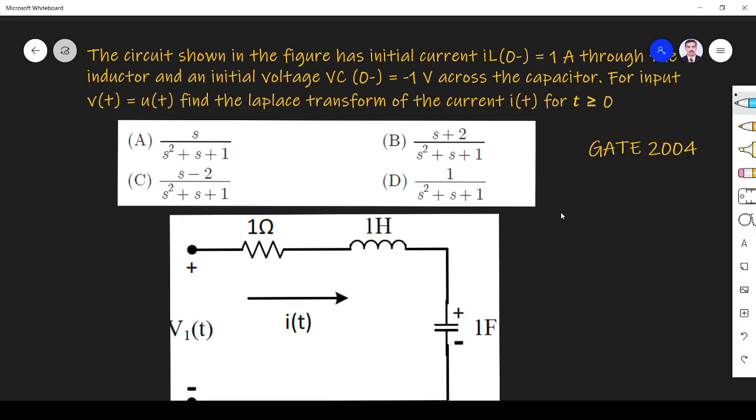So what they are given? IL(0-) initial condition. Similarly, VC(0-) = -1 volt, input V(t) they are given U(t). What they ask is Laplace transform of I(t).